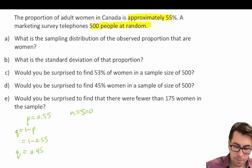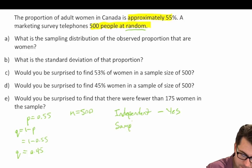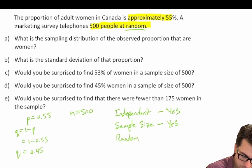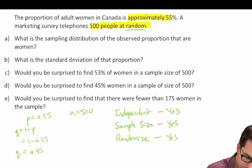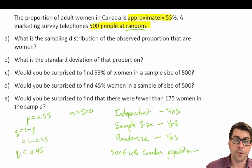What is the sampling distribution of the observed proportion that are women? Let's first think about whether we can assume a normal distribution. Are the observations independent of each other? They were phoned at random, so we're going to assume yes. Is the sample size large enough? 500 people is a fairly healthy sample, so again yes. Was there randomization? Yes, they were phoned at random. Is 500 less than or equal to 10% of the Canadian population? Yes it is — there are something like 30 or 35 million people in Canada.